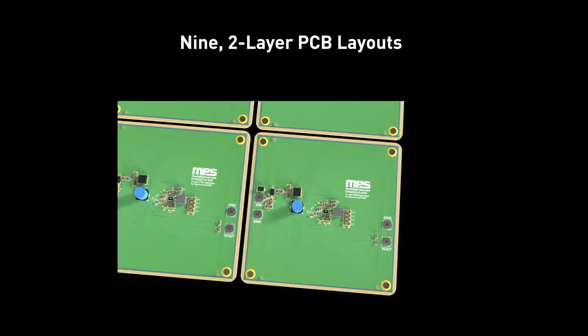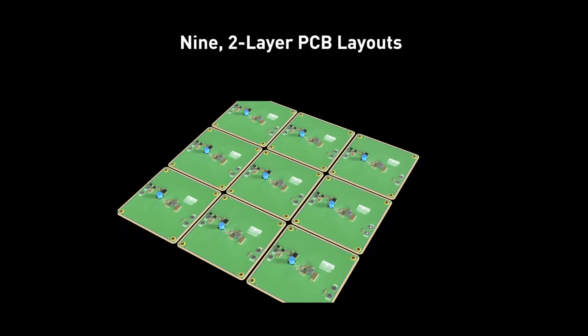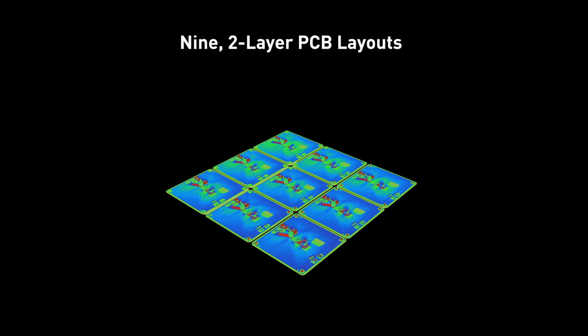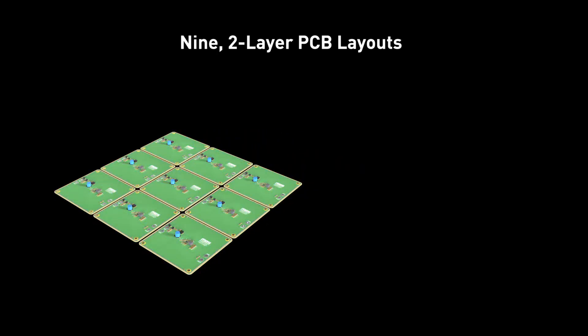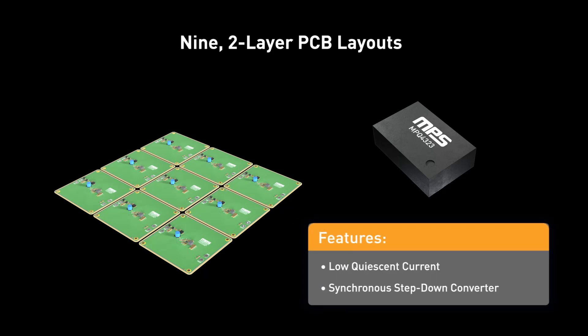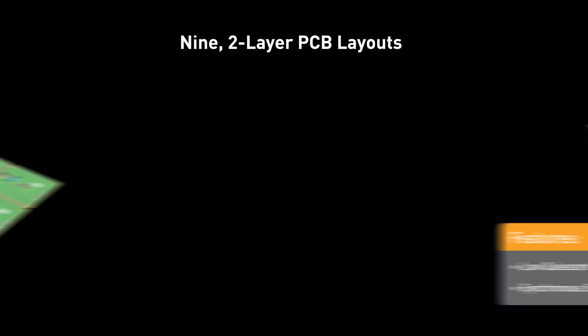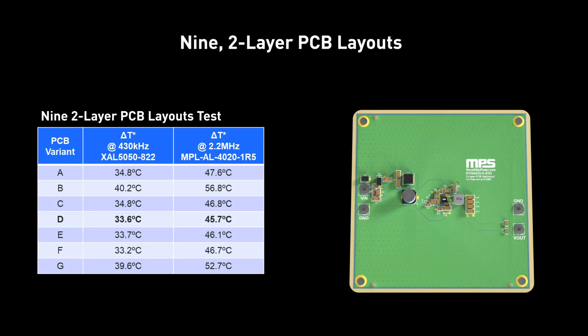We tested nine two-layer PCB layouts to see the effect of different layout implementations on thermal and EMI performance. All of these layouts feature the MPQ4323-AEC1 from MPS, a compact, low quiescent current, synchronous step-down converter. Based on the results of these tests, the recommended layout runs six degrees Celsius colder than the traditional layout, all without using extra parts or a larger board space.